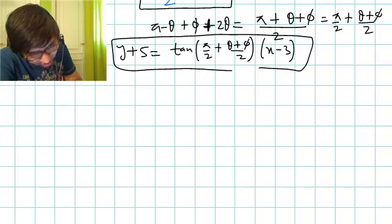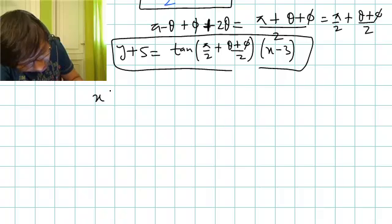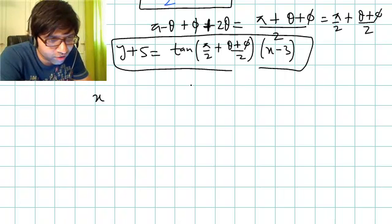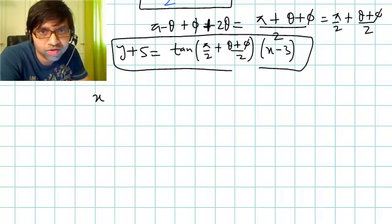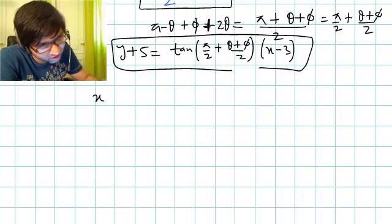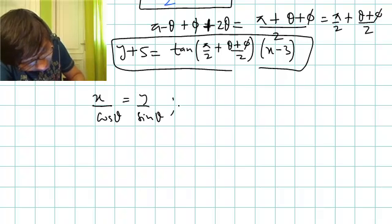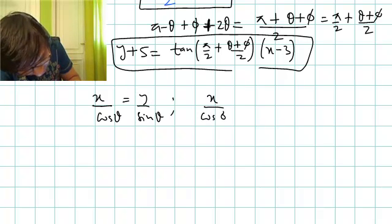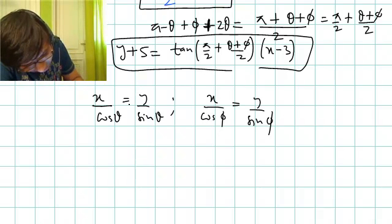Another approach to this question is to shift everything to the origin, since all the lines pass through (3, minus 5). At the origin, the first line becomes x over cos theta equals y over sin theta, and the second line becomes x over cos phi equals y over sin phi. Then we apply the standard bisector formula.